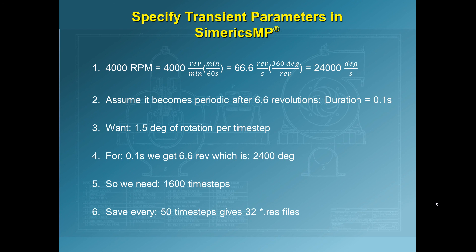Let's take a look at how you calculate the time step related parameters in SimericsMP. In this case, the rotor will be spinning at 4000 RPM, which is around 66 revolutions per second. We'll assume it becomes periodic after about 6.6 revolutions, which is one-tenth of the 66.6 revolutions per second. So the simulation time, or duration, will be 0.1 seconds.